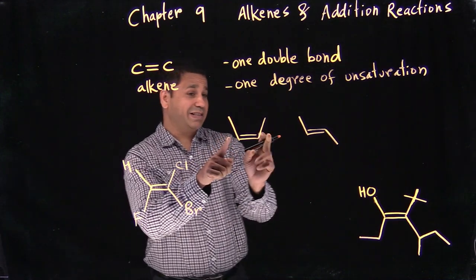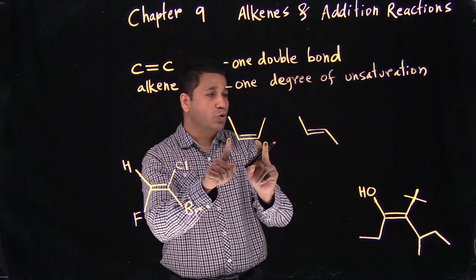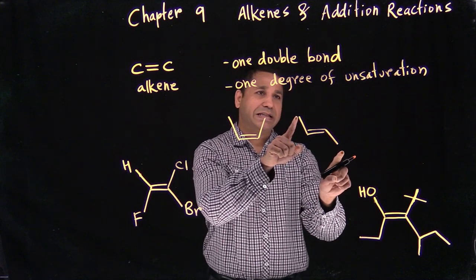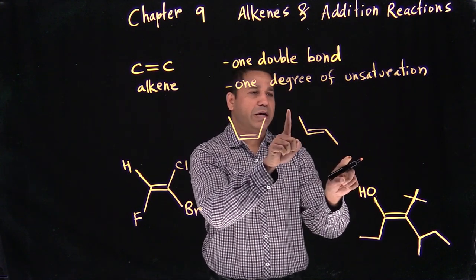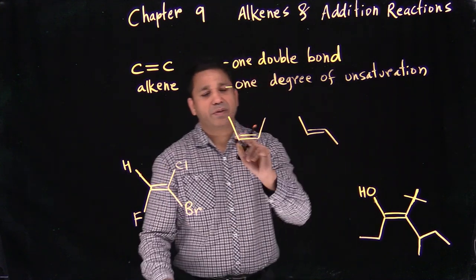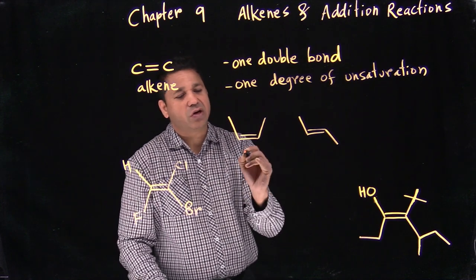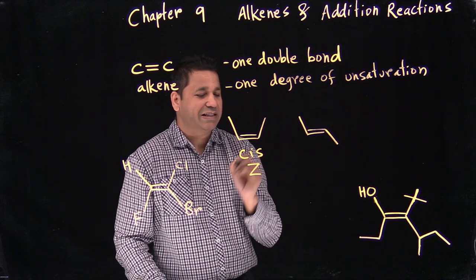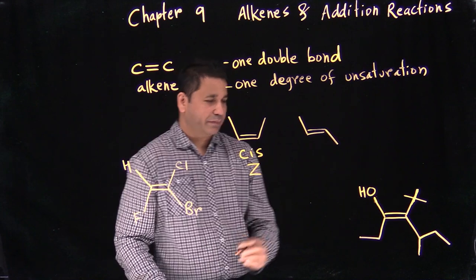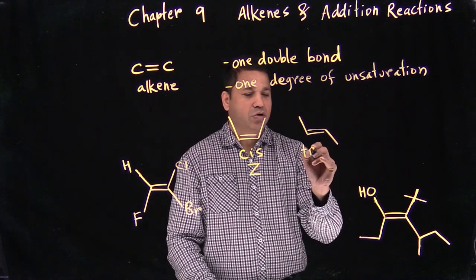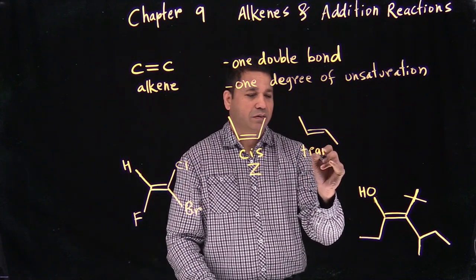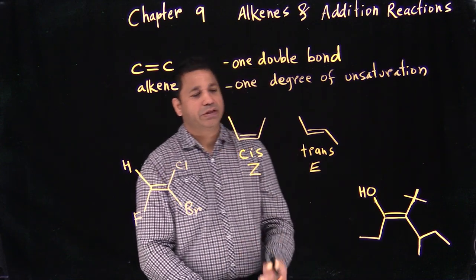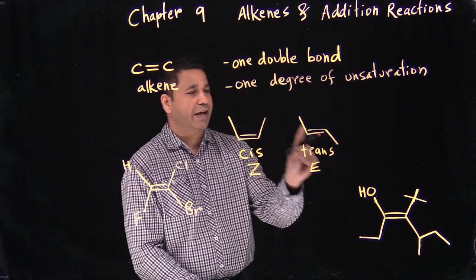A double bond can have two groups on the same side, or one up and one down. When you have the two groups on the same side, we call it a cis double bond, also referred to as Z. The other orientation is called trans, referred to as E.